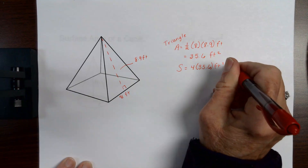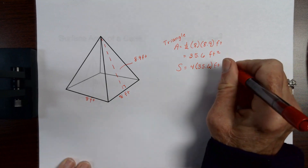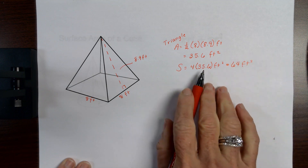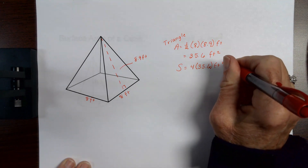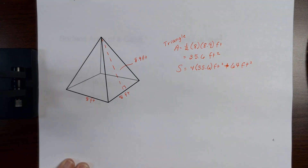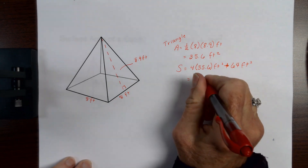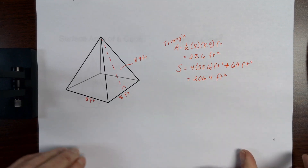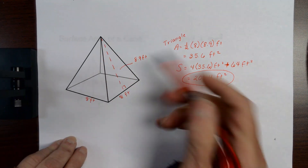Plus I need the area of the base. If that's eight feet, this is also eight feet, so eight times eight is 64 feet squared. So: four times 35.6 plus 64 gives a total surface area of 206.4 feet squared — that's all the way around the pyramid plus the base, on the surface, not inside it.